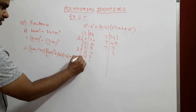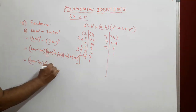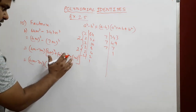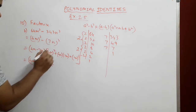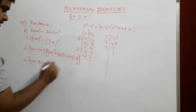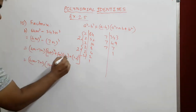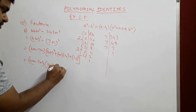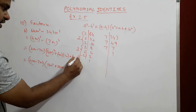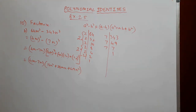Expanding: (4m)² = 16m², (4m)(7n) = 28mn, and (7n)² = 49n². So the final answer is (4m - 7n)(16m² + 28mn + 49n²). With that we finish solving Question 10.